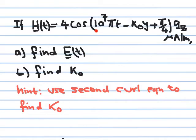Everywhere along that plane the field will simply have a constant value — T is fixed because we froze time, and y is fixed because we picked one plane only. Such a wave is called a uniform plane wave. Let me show you how this looks in the next slide.